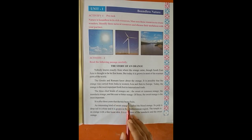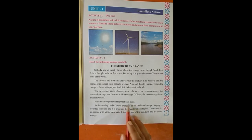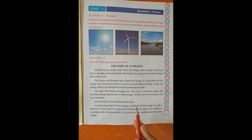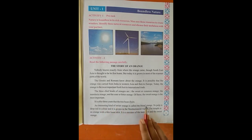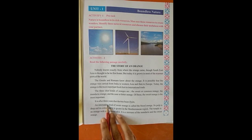It is after three years that the orange tree bears fruit। तो orange का tree उगाने के बाद three years के बाद उसके fruit आने start होते हैं। An interesting kind of sweet orange is called the blood orange — यह एक बहुत ही interesting kind है।